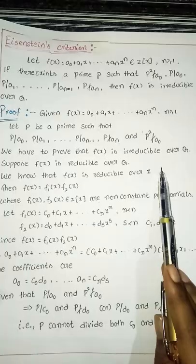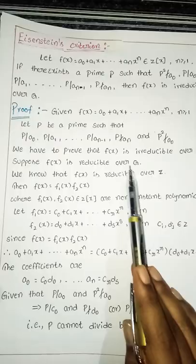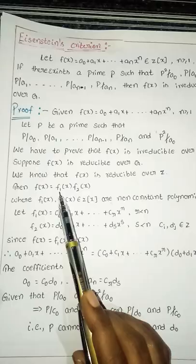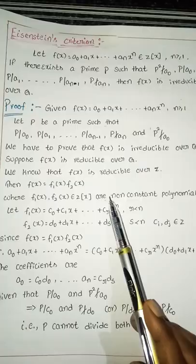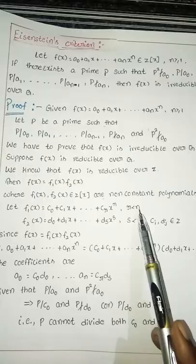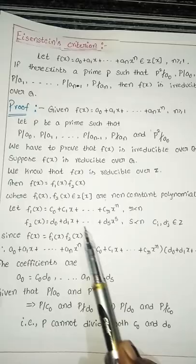Suppose f(x) is reducible over Q. We assume this, and we know that if f(x) is reducible over Q then it is reducible over Z. Then f(x) = f1(x)·f2(x) where f1(x) and f2(x) belong to Z[x] and are non-constant polynomials. Let f1(x) = c0 + c1·x + ... + cr·x^r with r < n, and f2(x) = d0 + d1·x + ... + ds·x^s with s < n.